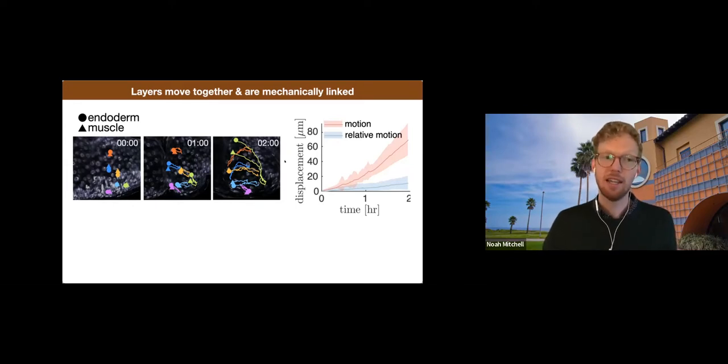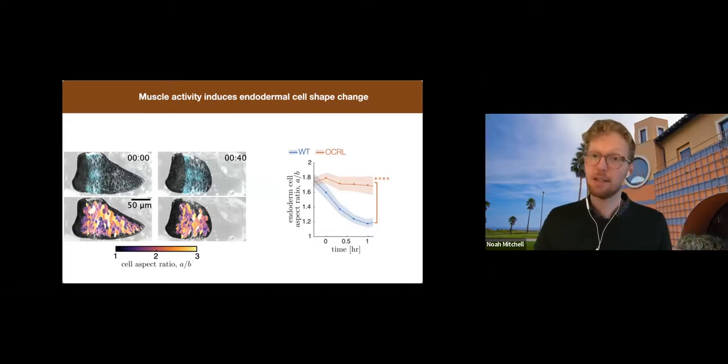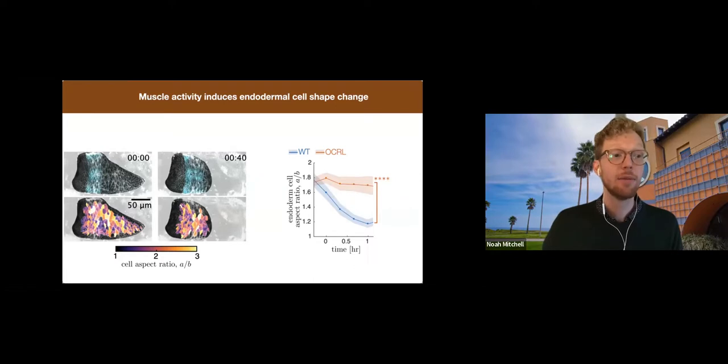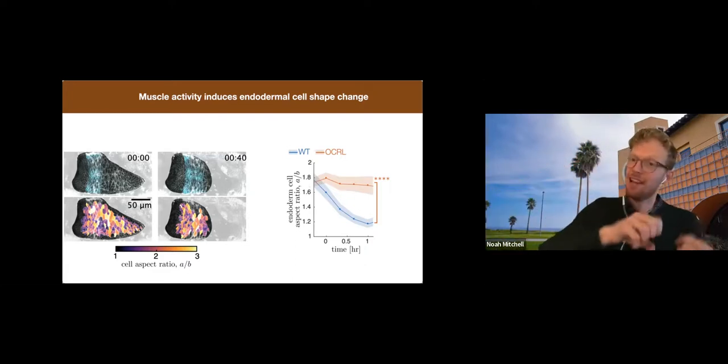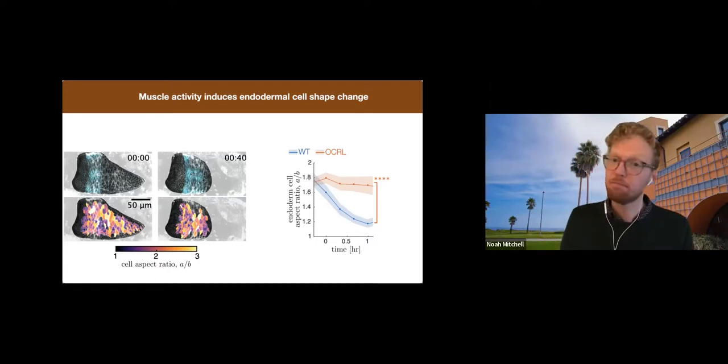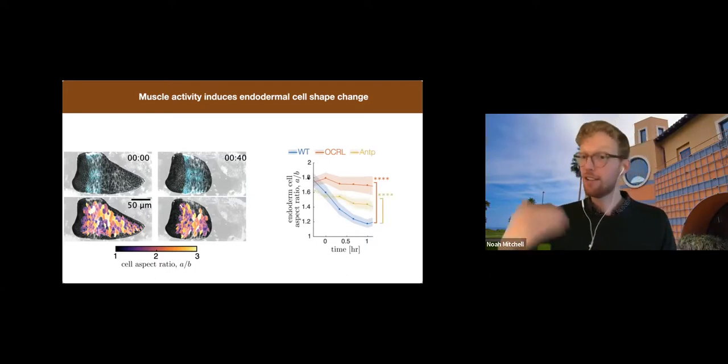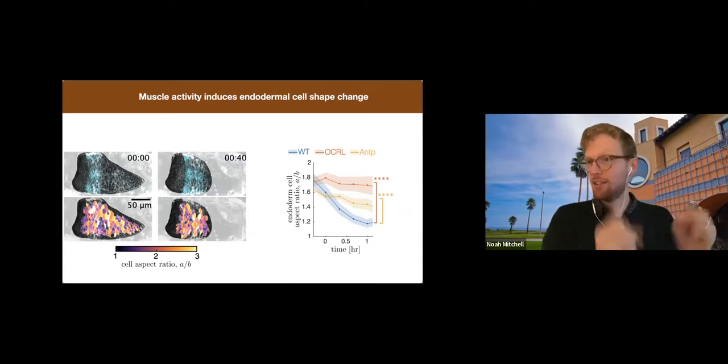And if we inhibit muscle contractility, then we might expect that the endodermal cell shapes will then stay fixed as opposed to undergoing their convergent extension. So we'd go in and measure this. We knock down the muscle contractility and simultaneously segment the endodermal cell shapes. And we find that by reducing the muscle contraction, this removes the ability for the endoderm to change shape. So we conclude that muscle activity induces these endodermal cell shape change in the wild type. And that's, we know already, linked to the organ constriction. And interestingly, a genetic mutant against a Hox gene, which also loses this fold, has qualitatively similar behavior. So this suggests to us that the Hox genes are really controlling muscle contraction in order to induce this convergent extension to fold.